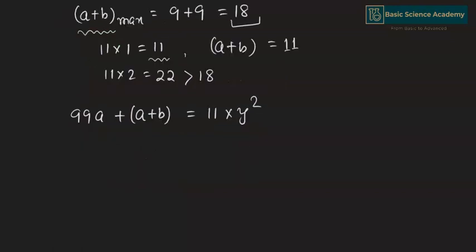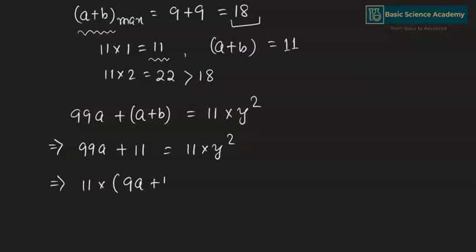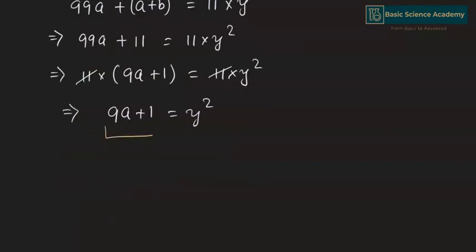Now the equation becomes 99A + 11 = 11×y². Taking 11 common gives 11×(9A + 1) = 11×y². The 11s cancel, giving 9A + 1 = y². Hence 9A + 1 must be a perfect square.